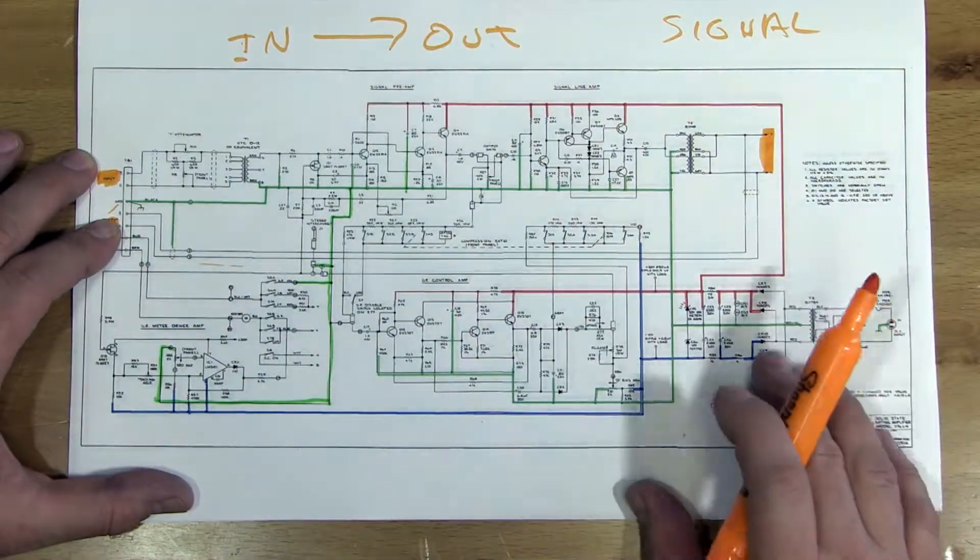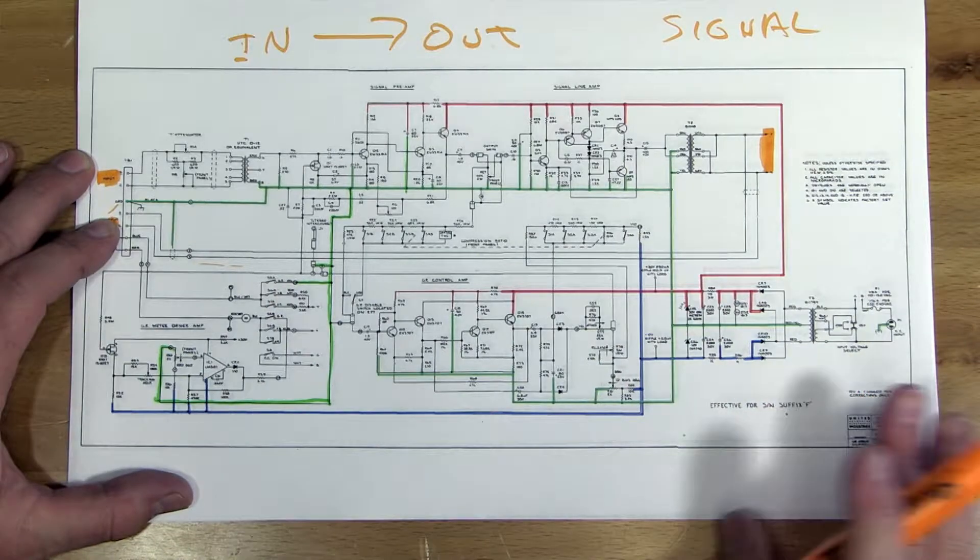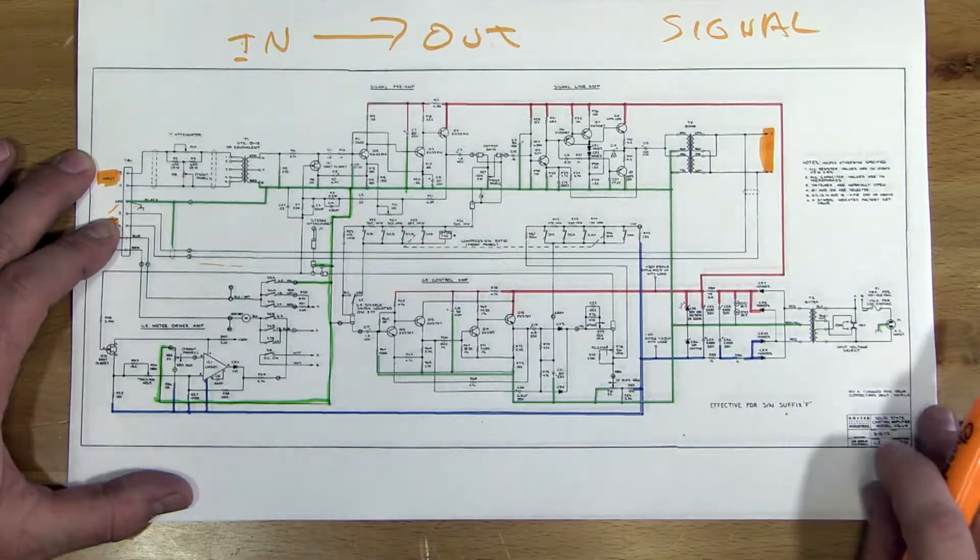Now one of the important things for the signal path is that we're not looking at current direction. We're not looking at signal polarity or anything like that. Just how does the signal get through?